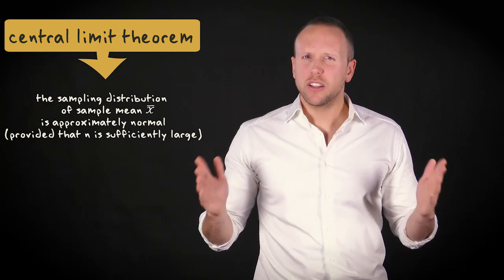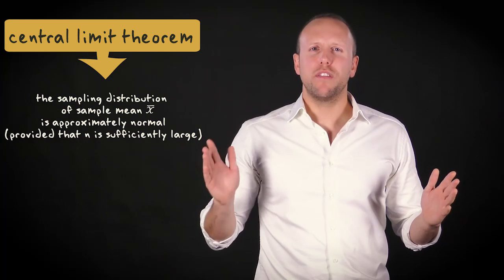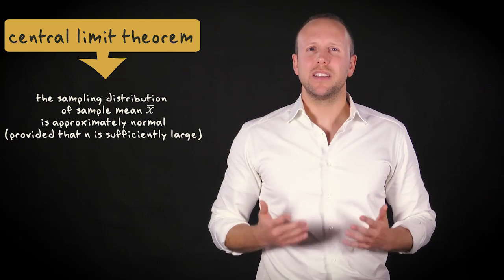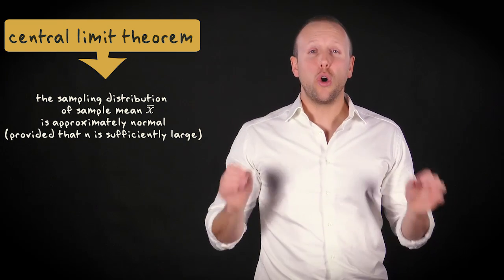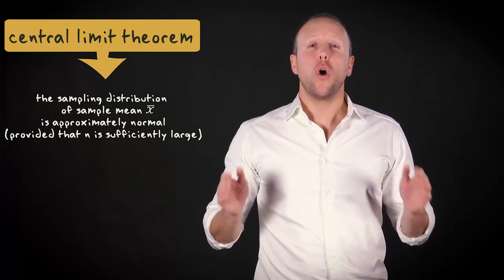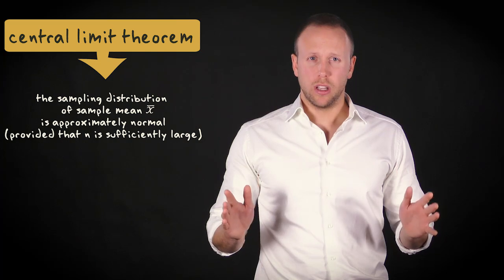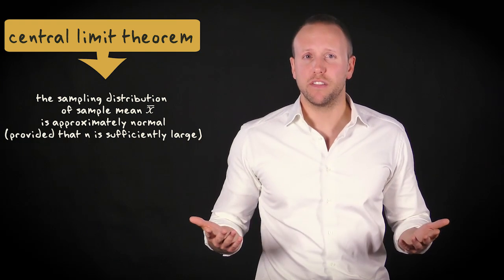No matter how a variable is distributed in the population, the sampling distribution of the sample mean is always approximately normal, as long as the sample size is large enough.